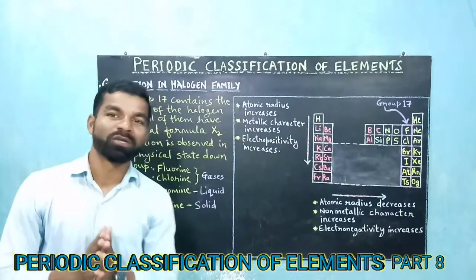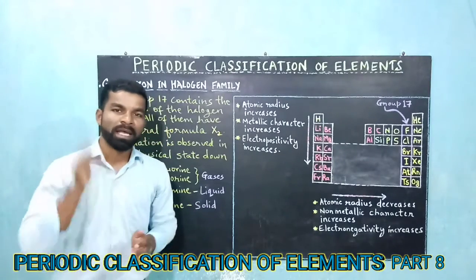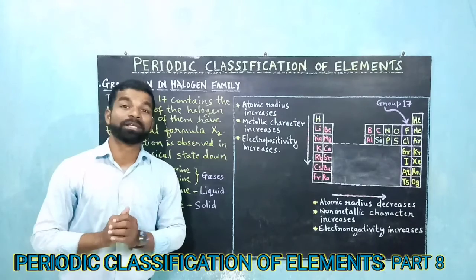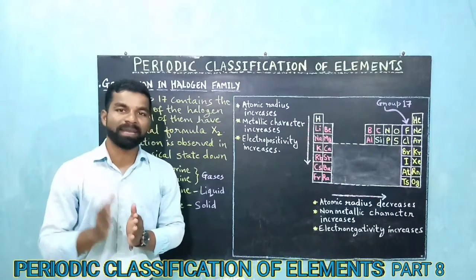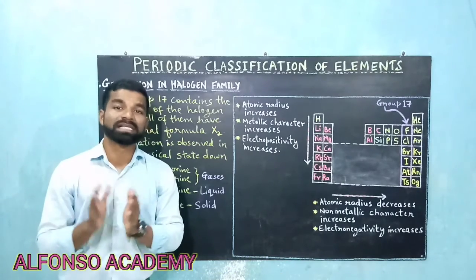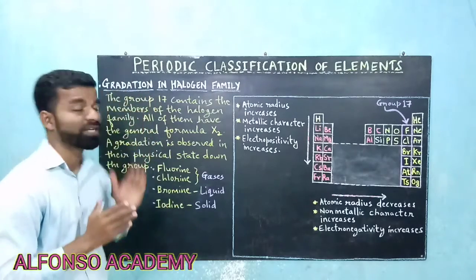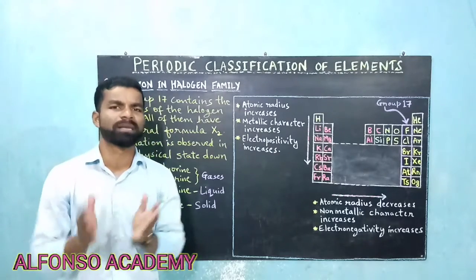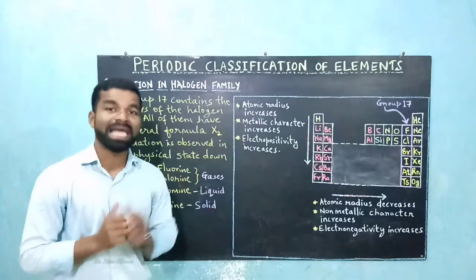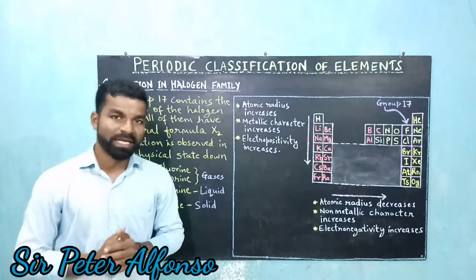Hello everyone, welcome to Alfonso Academy. I am Sir Peter Alfonso and this is the 8th part of the chapter periodic classification of elements. In this part we are going to discuss the gradation in halogen family and then we are going to see some important questions based on the elements in the modern periodic table.